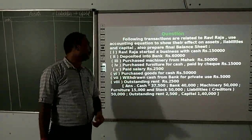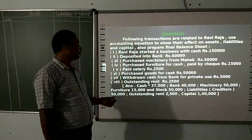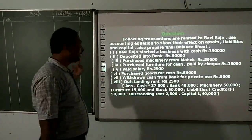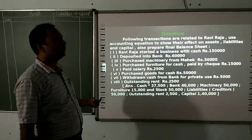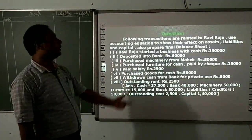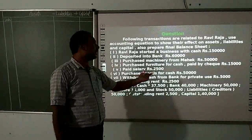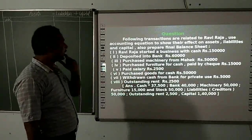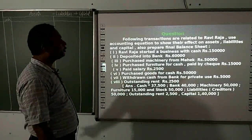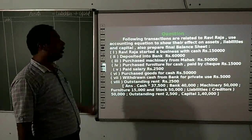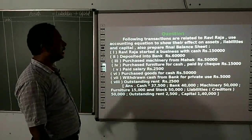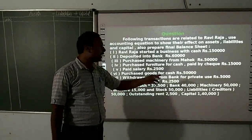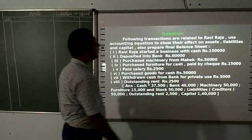Paid salary Rs. 2,500 — cash decreases and capital decreases. Purchase goods for cash Rs. 50,000 — cash reduces, and a stock column is created in the accounting equation. Withdrawn cash from bank for private use Rs. 5,000.